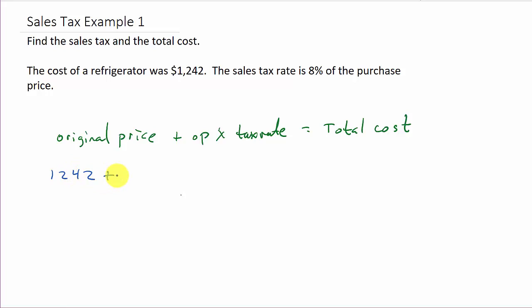Plus, what's the amount you're going to pay on tax? What's the sales tax? Actually, that's one of the things we've got to find. So we're going to add the sales tax. How do we get the sales tax? It's the original price of the item.